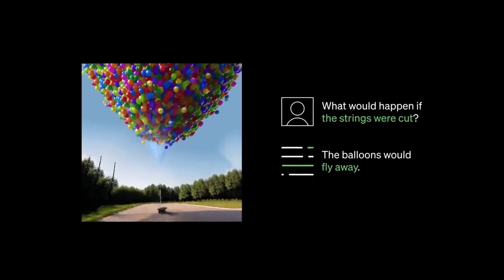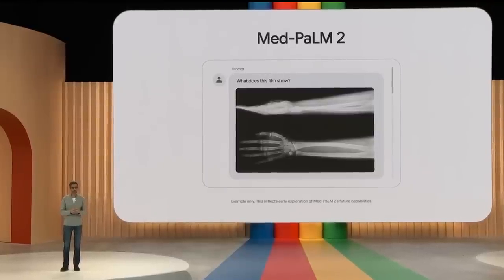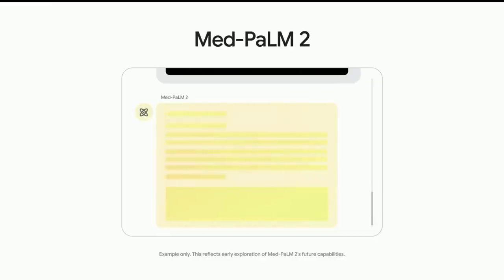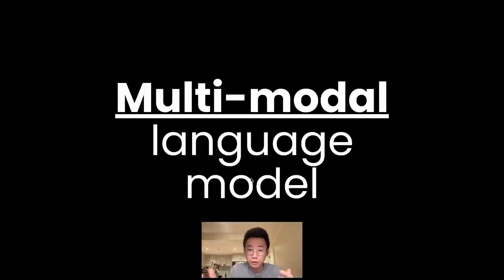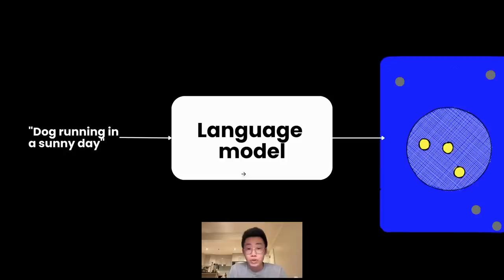Recently, large language models like OpenAI GPT-4 and Google PaLM-2 have shown incredible results integrating visual inputs and text to perform multimodal tasks. That's kind of the next frontier of generative AI. Unlike large language models, which take text input and turn them into vector embeddings to understand relationships between words and predict the next word in a sentence,